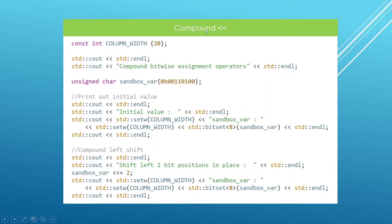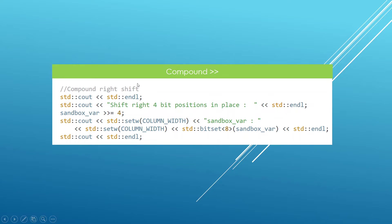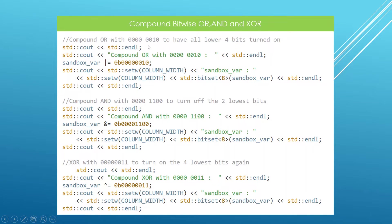Here is a simple example of the compound bitwise left shift operator. We have a variable called sandbox_var which is going to store our values. We have a literal and we're going to be shifting it left in place. This statement is the compound bitwise left shift operator — it's going to shift left by two bits and store the result back in sandbox_var. We also have compound right shift: shifting right by four bits and storing the result back in sandbox_var, printing it out with std::bitset.